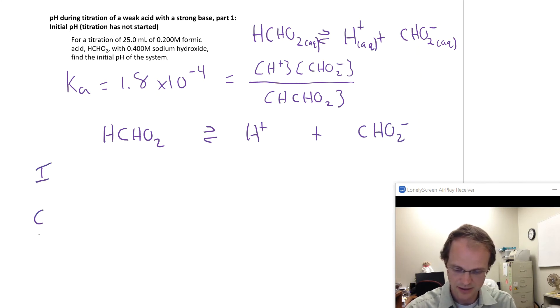We've got ICE. We're given an initial concentration of the formic acid. Remember, the amount we have doesn't matter - 10 milliliters will be the same pH as 100 milliliters. So we put in our concentration there, 0.200 molar.